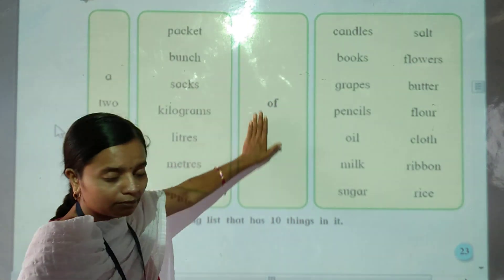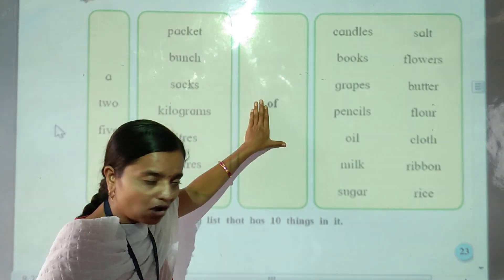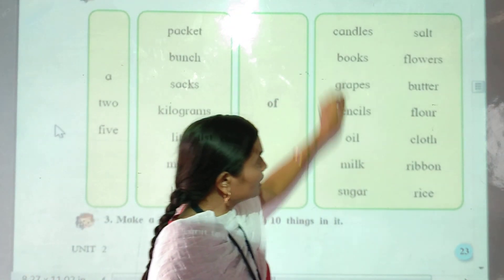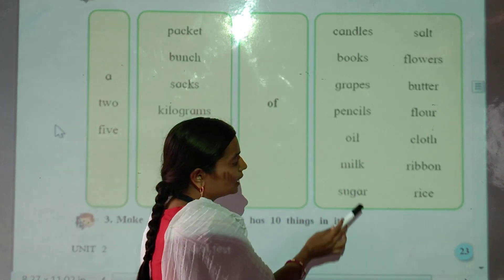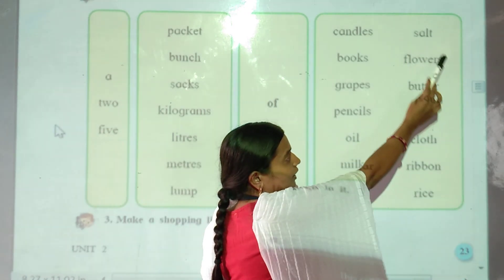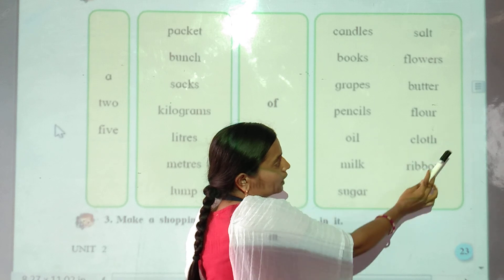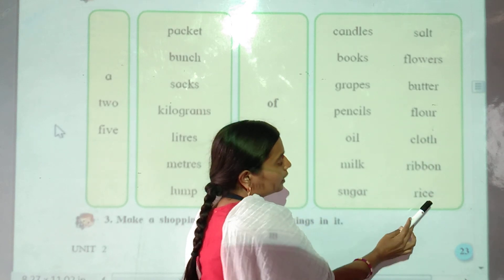Of, third table, of. Candles, books, grapes, pencils, oil, milk, sugar, salt, flowers, butter, flour, cloth, ribbon, rice.